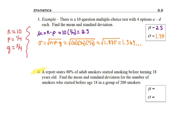So let's look at question four. A report states that 80% of adult smokers started smoking before turning 18 years old. Find the mean and standard deviation for the number of smokers who started before age 18 in a group of 200 smokers. Importantly, it's in a group of 200 because we're going to need that n. So I would need to find my parts, the 200 smokers.